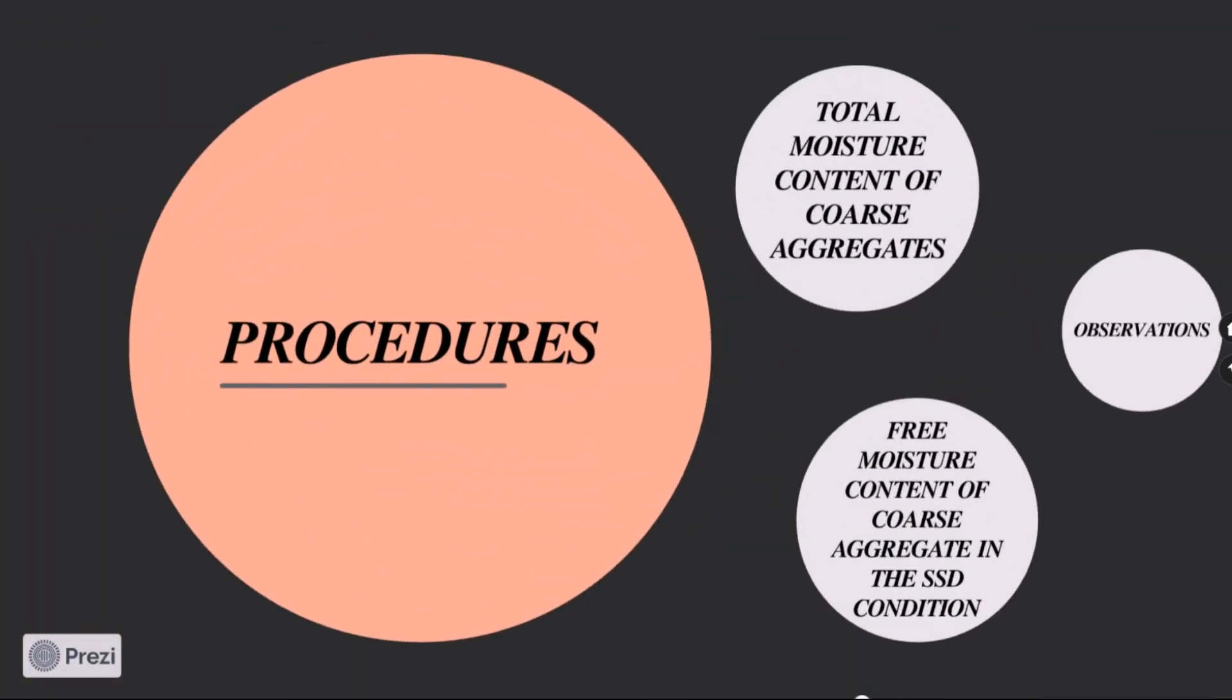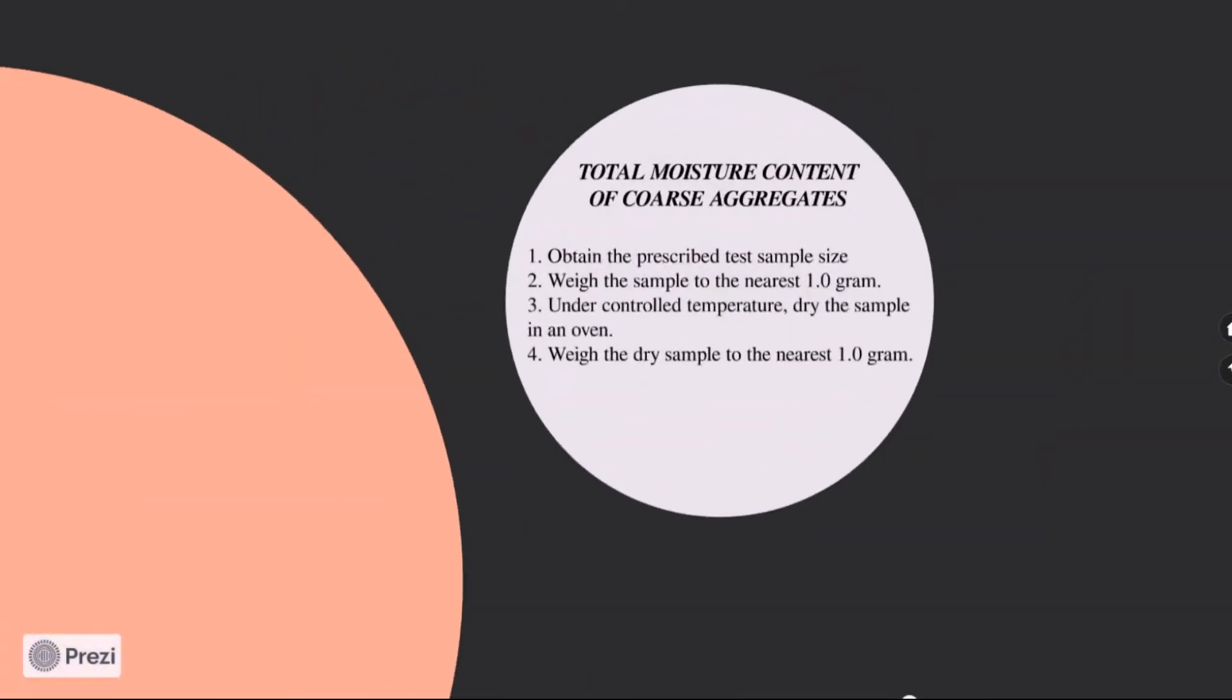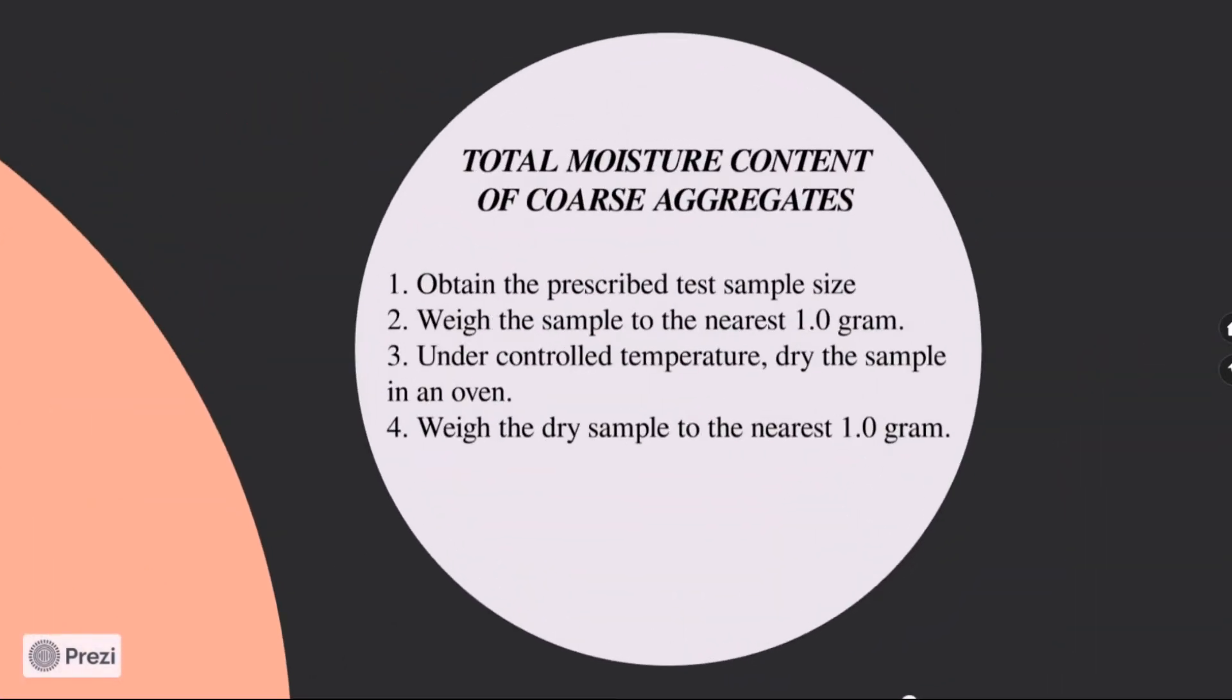We have two different procedures in determining the moisture content: the total moisture content of coarse aggregates, and the free moisture content of coarse aggregate in the saturated surface dry condition. In total moisture content, we have four steps. First, obtain the prescribed test sample size. Then, weigh the sample to the nearest 1 gram. We need to do this quickly to avoid moisture loss. Next, under controlled temperature, dry the sample in an oven. The sample is completely dry when further drying would cause less than 0.1% additional loss in weight. Lastly, weigh the dry sample to the nearest 1 gram.